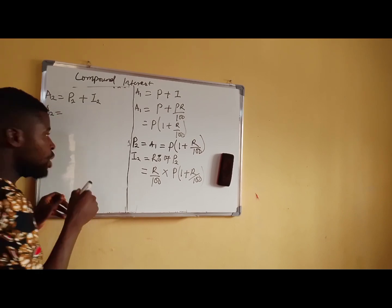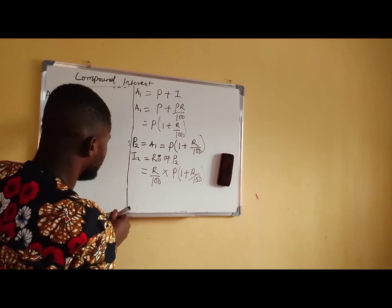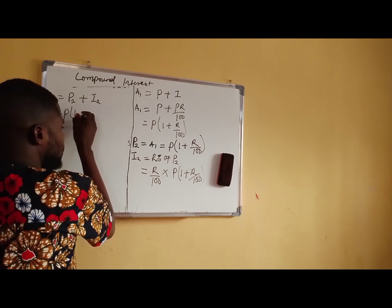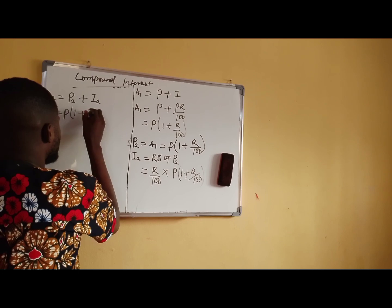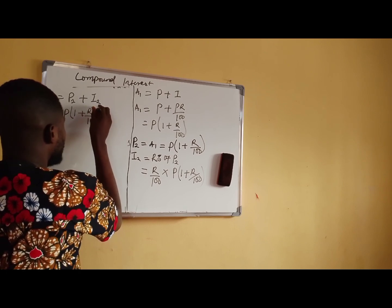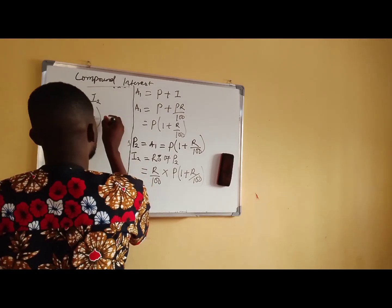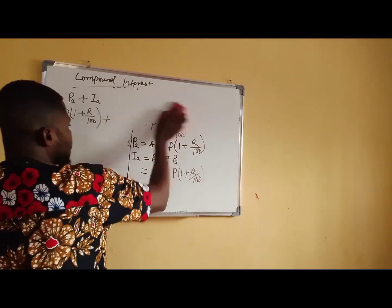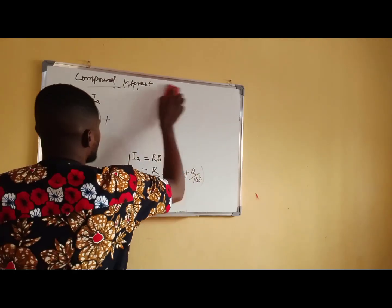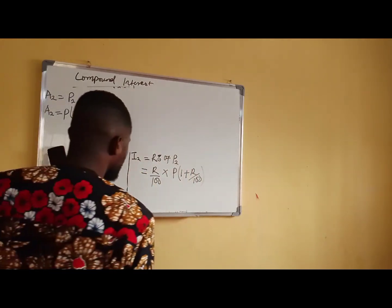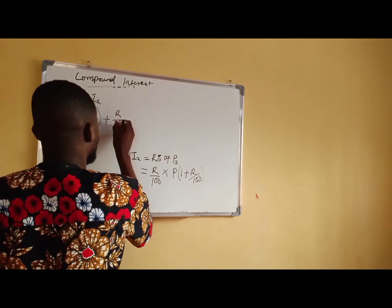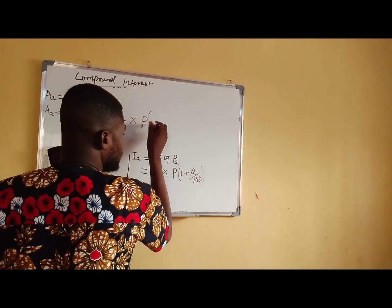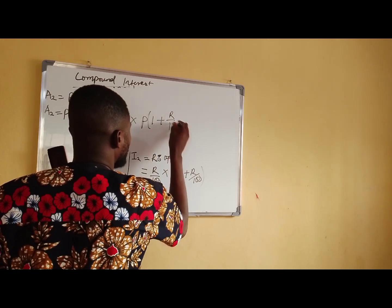A2, which is the amount in the second year, is the same thing as: the value of P2 is equal to P in bracket 1 plus R all over 100. And the value of I2 is the same thing as R all over 100 multiplied by P in bracket 1 plus R all over 100.